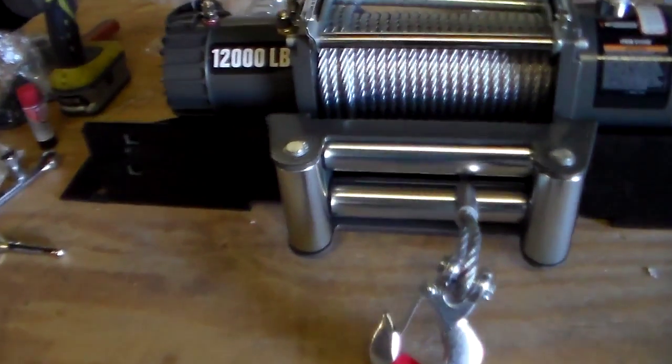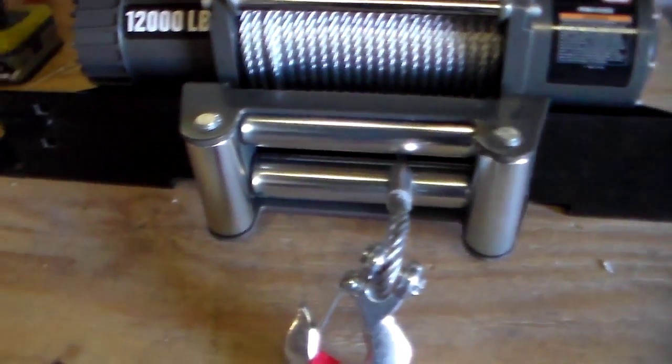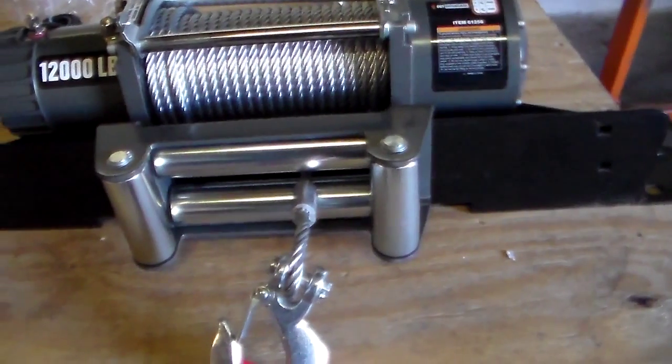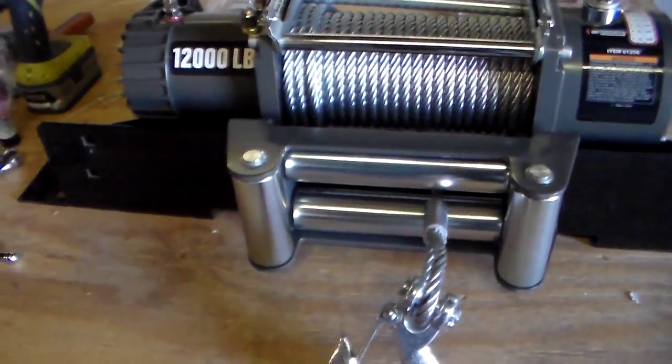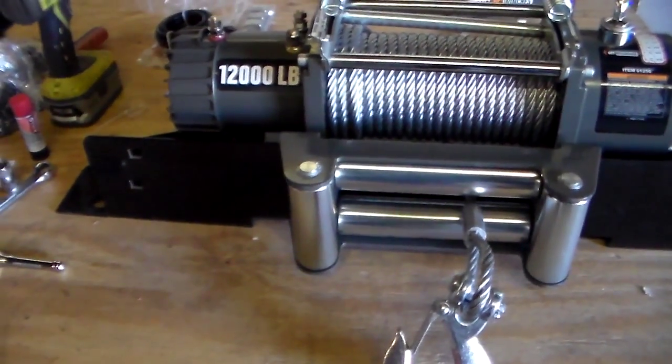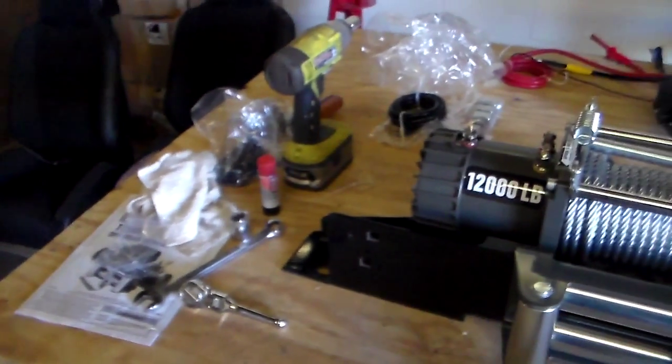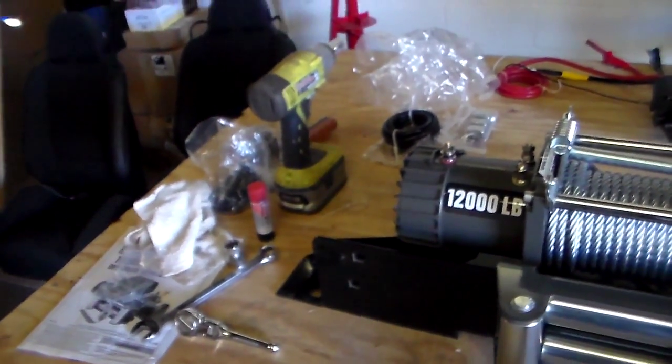So I got the bolts nice and tight, torqued down. I didn't see any torque indicator on the bolts as far as the instructions go. So I don't know how tight it's supposed to be, but I got my impact. I use that for lug nuts and stuff and it seems to do fine.